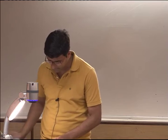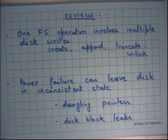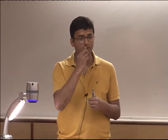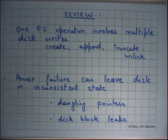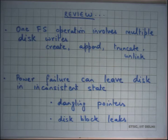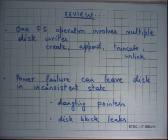Welcome to operating systems lecture 34. We are discussing file systems and we saw that one file system operation typically involves multiple disk writes. Examples: creating a file requires writing to the parent directory, the inode, and the data blocks. Similarly, appending to a file requires writing to data blocks, the index, and the inode. Truncate removes blocks from the file, and unlink removes a file from a directory. All these operations involve typically 4 to 8 disk writes per operation.